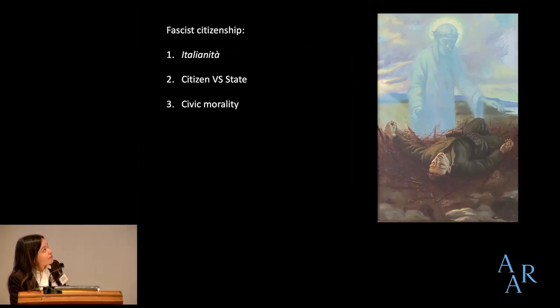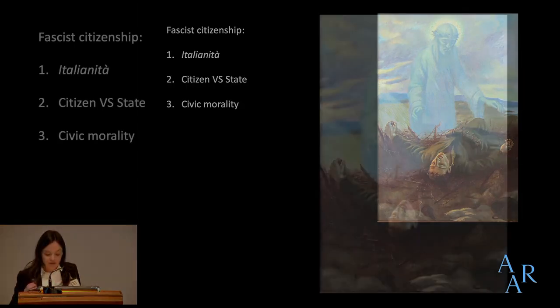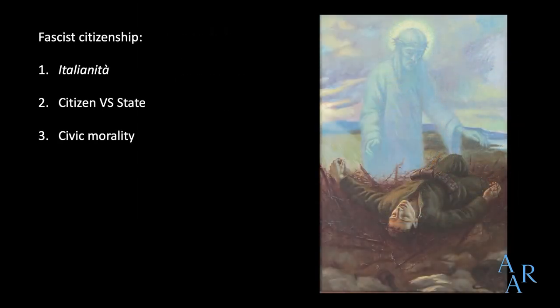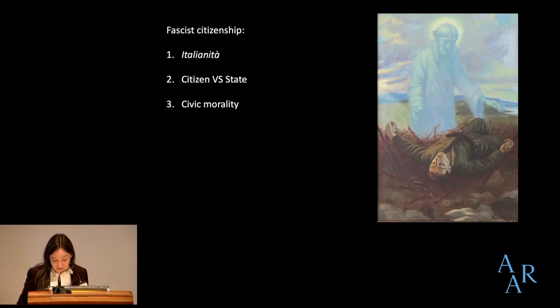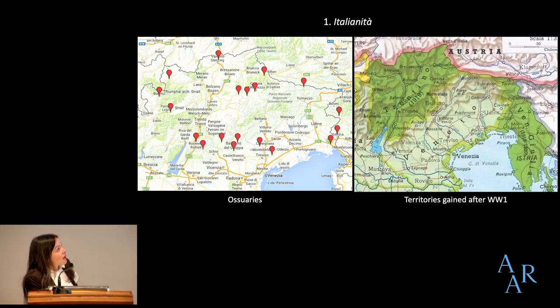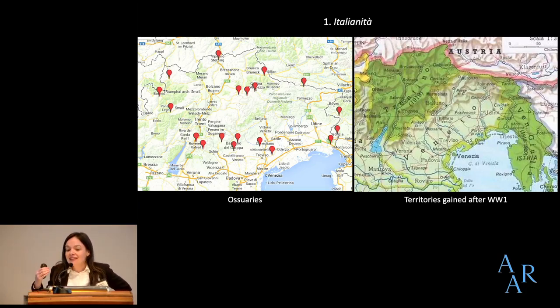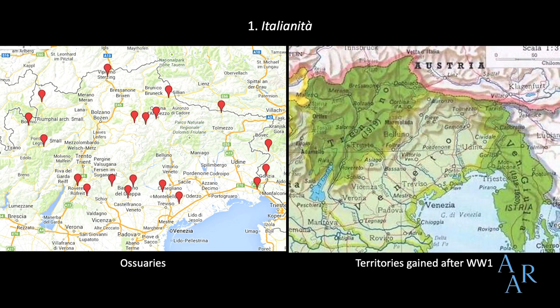I want to focus on three aspects of fascist citizenship: Italianness or Italianità, the relationship between the citizen and the state, and civic morality. Let's start first with Italianità, or Italianness, as a component of citizenship.